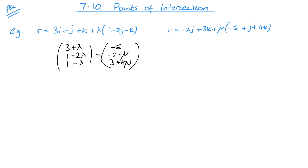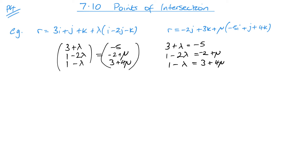This gives us three equations for the x, y, and z directions: equation 1: 3 + λ = −5μ; equation 2: 1 − 2λ = −2 + μ; and equation 3: 1 − λ = 3 + 4μ. Apologies — I missed the μ out of the first equation; that was 0i minus 5μ.